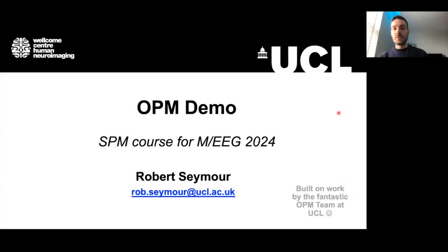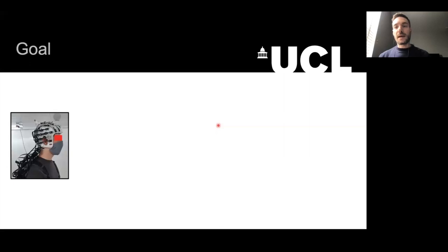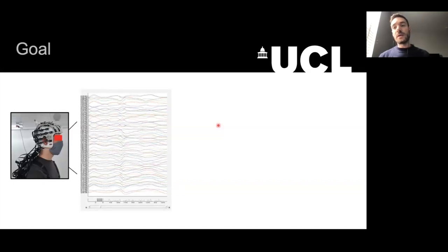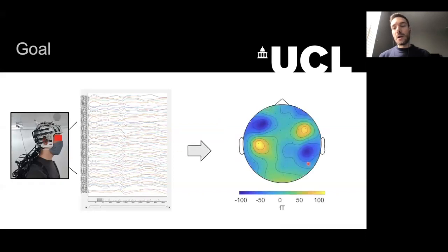Hi everyone, I'm Rob Seymour and I am a postdoc at the Wellcome Centre for Human Neuroimaging. Today we're going to be talking about analysing OPM data. The goal of today is to take our multi-channel OPM data, which generally is noisier than SQUID MEG data, and turn it into something interpretable from the brain.